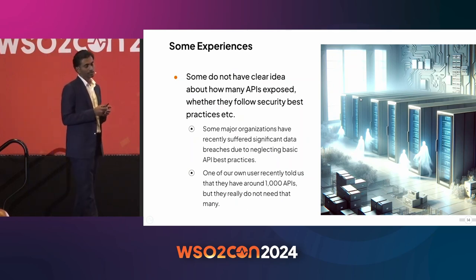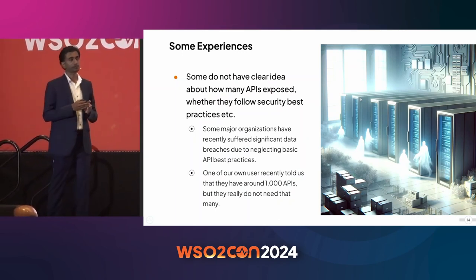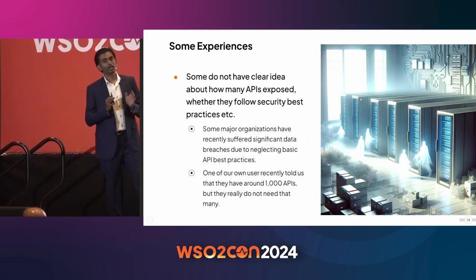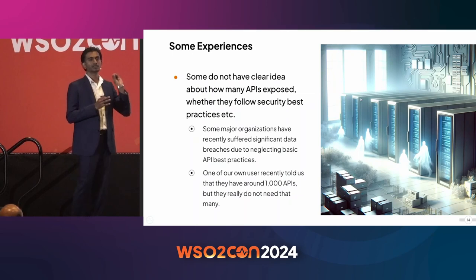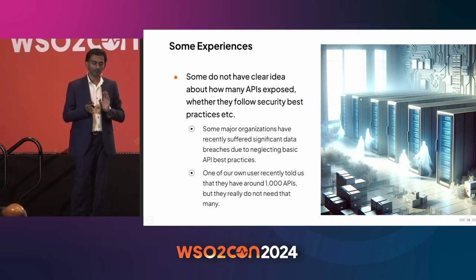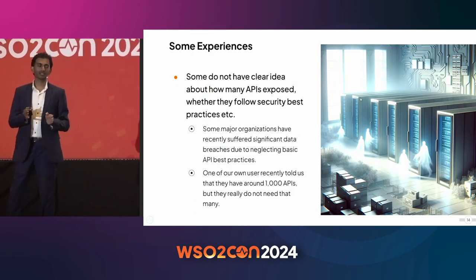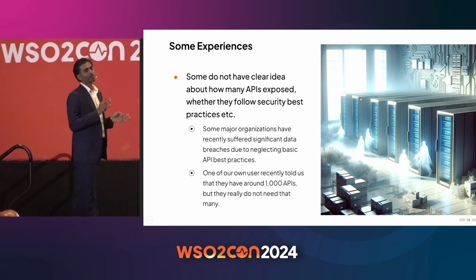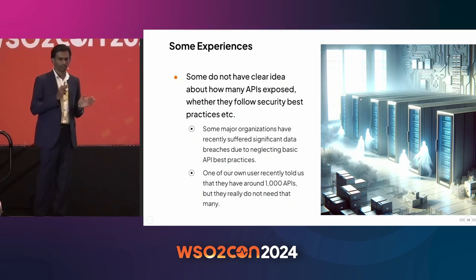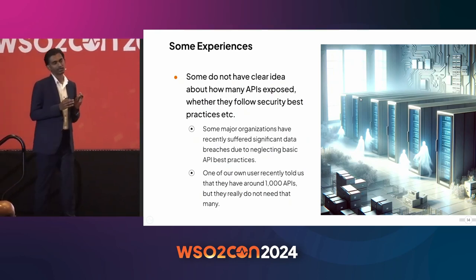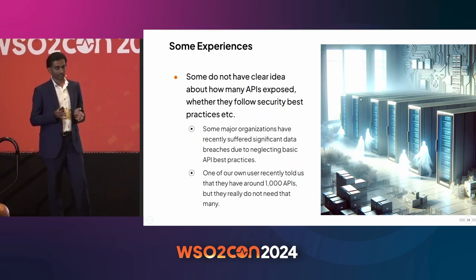If you can't track these zombie APIs properly, it can cause serious security issues. Around 2020–21, there was a major data breach with a famous social media company. They had exposed developer APIs that let developers pull some user data. After some time, they realized those APIs were no longer needed and tried to retire them, but missed a few due to process issues. Attackers found these APIs and scraped around 10 million user records, causing major reputational damage.